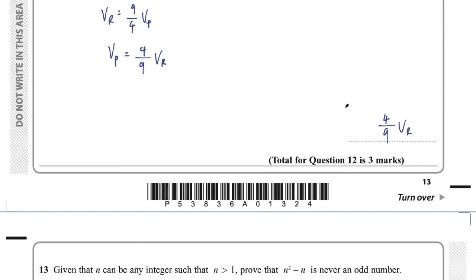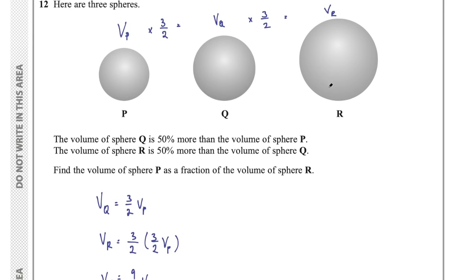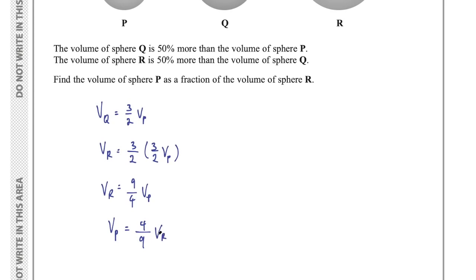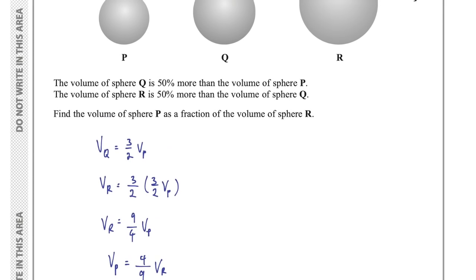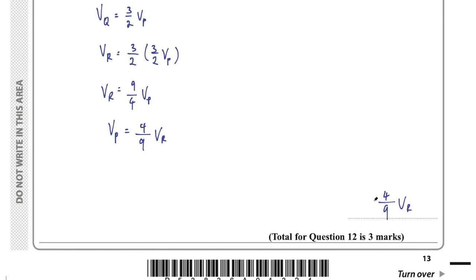Just to reiterate: the volume of sphere P must be less than R. When expressing P as a fraction of R, it has to be less than 1. If you multiply VR by something smaller than 1 you get a smaller volume. An answer of 9/4 would give a larger sphere, not smaller. So always double-check the direction of the question.